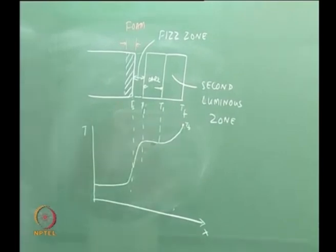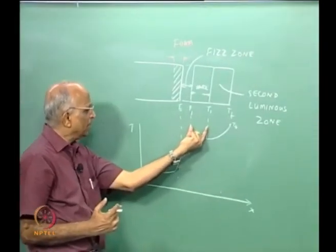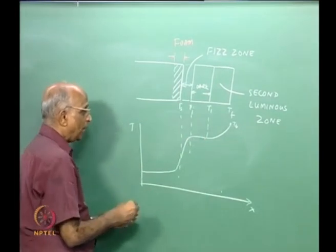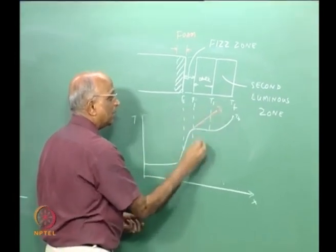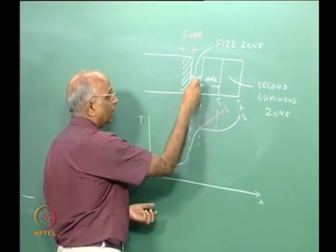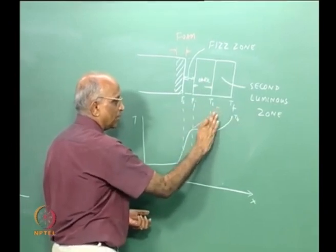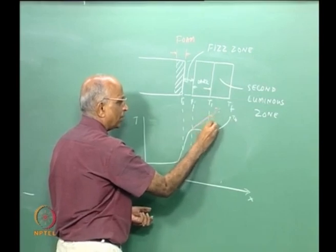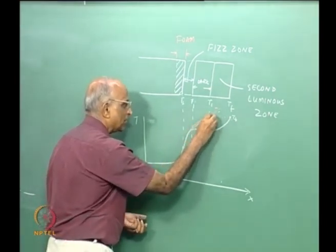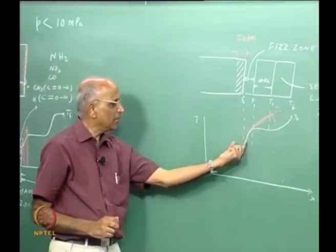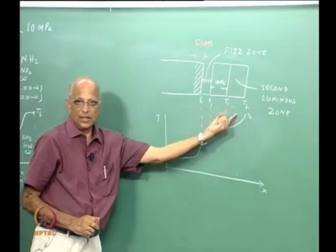If the pressure exceeds 100 atmospheres (10 MPa), the chemical reactions and heat release continue without a pause, so the temperature goes straight to T_f. The dark zone is absent at high pressure, and the first luminous zone is followed directly by the second luminous zone reaching the same final temperature T_f. At moderate pressures up to 100 atmospheres there is the dark zone, and then temperature increases to T_f.